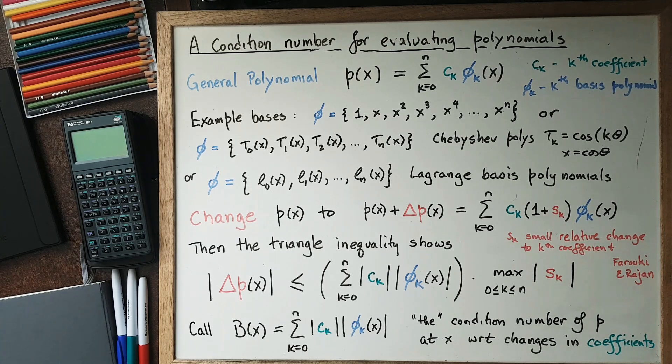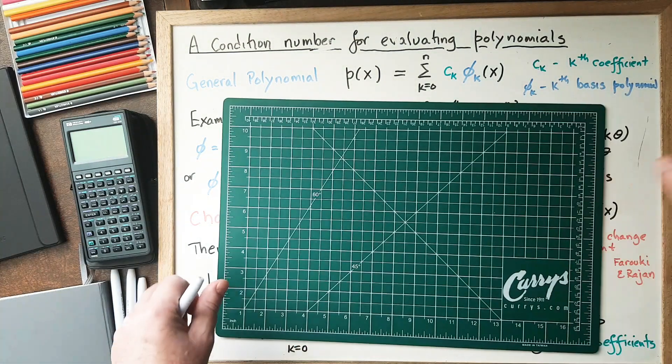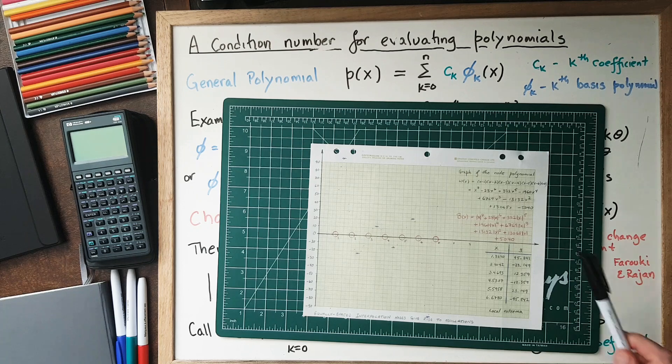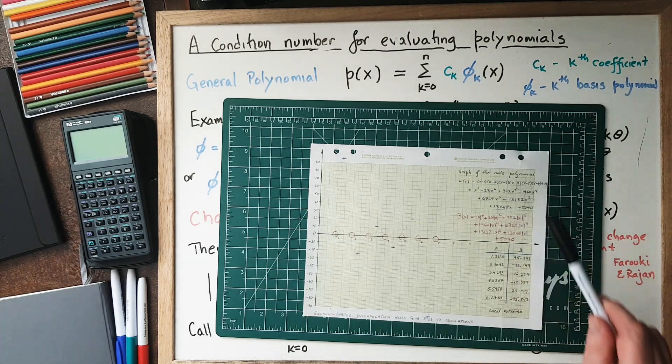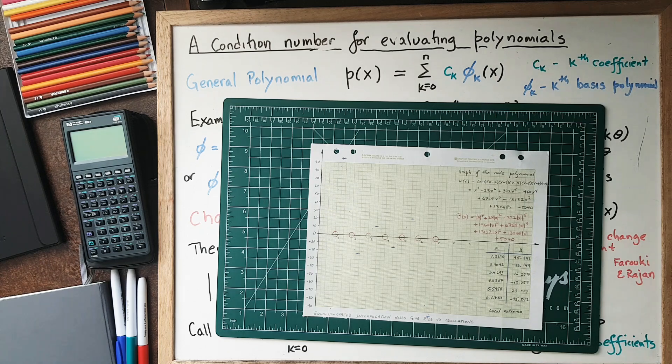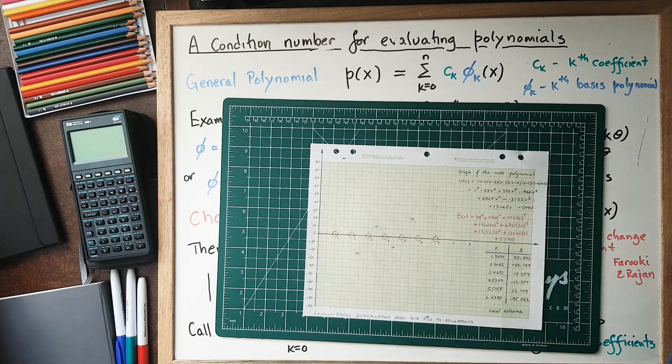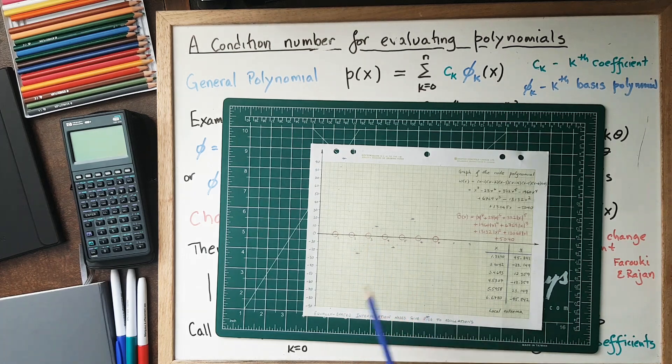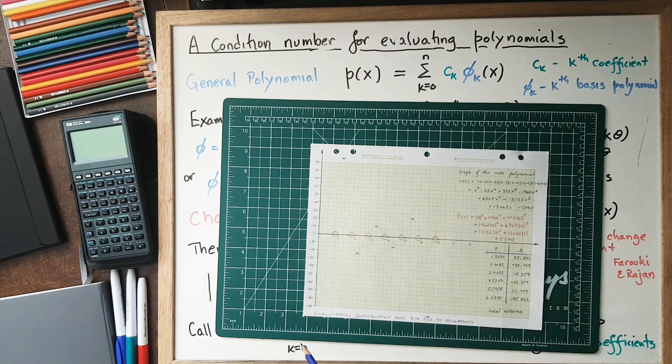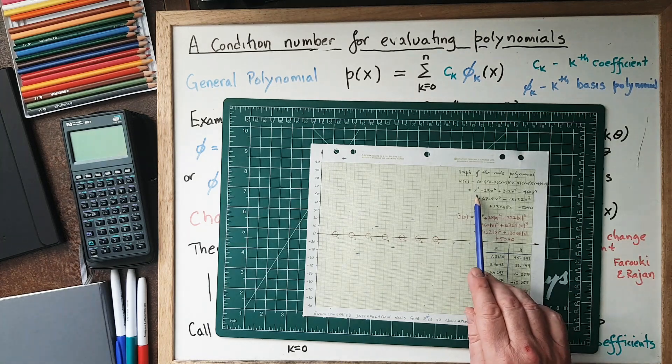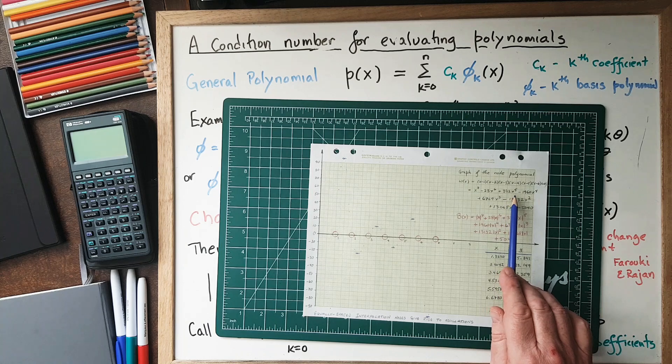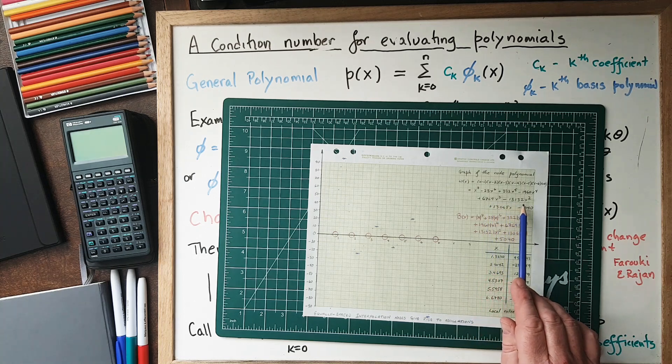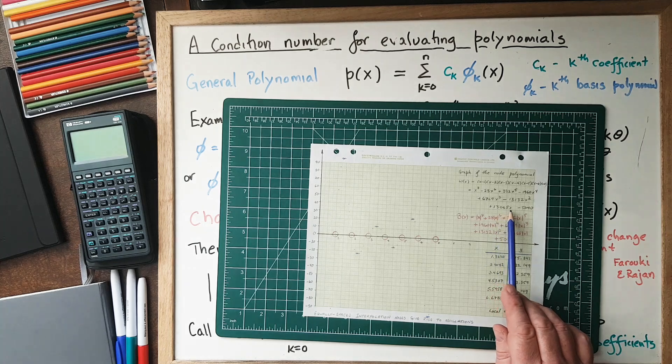I'm just going to cover this up for a moment. We'll look at a graph I've prepared of the node polynomial (x-1)(x-2)(x-3)(x-4)(x-5)(x-6)(x-7). That's just a polynomial with zeros at x equals 1, 2, 3, 4, 5, 6, and 7, and it's monic. When we expand it, we get x^7 - 28x^6 + 322x^5 - 1960x^4 + 6769x³ - 13132x² + 13068x - 5040.